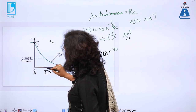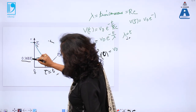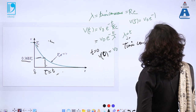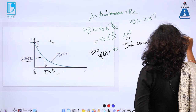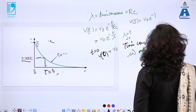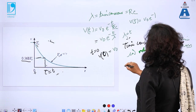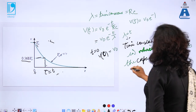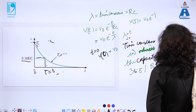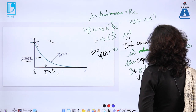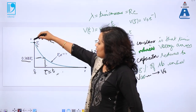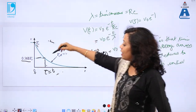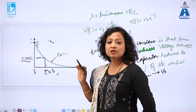The time constant τ is defined as that time in which the voltage across the capacitor reduces to 36.8 percent of its initial value V0. This is the source-free RC circuit: the capacitor is fully charged, acts like a source, and finally discharges completely. The time constant is that time in which the voltage reduces to 36.8 percent of its initial value, as shown on the graph.